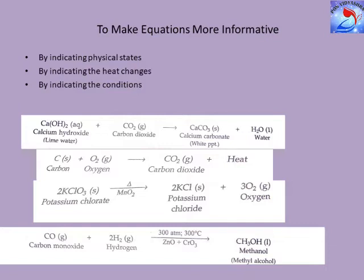The last example: methanol (methyl alcohol) is manufactured from carbon monoxide and hydrogen. The mixture of CO and H₂ is compressed to 300 atm pressure and passed over a catalyst of zinc oxide and chromium oxide (ZnO + CrO₃), heated to 300°C. The chemical equation is: CO + 2H₂ → CH₃OH, with conditions 300 atm, 300°C, and catalyst ZnO + CrO₃. Thank you, children.